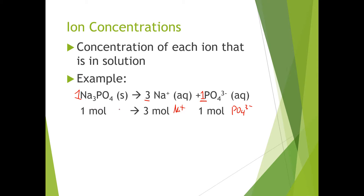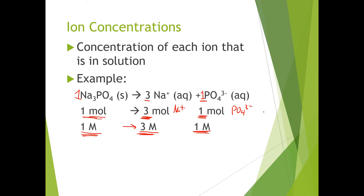Now, because concentration is dependent on mole amounts, the concentrations would be as follows: if I had a one molar solution of sodium phosphate, it would dissolve into a three molar concentration of sodium ions and a one molar concentration of phosphate ions — because for every one mole of sodium phosphate dissolved, I get three moles of sodium and one mole of phosphate.